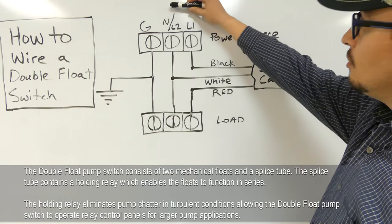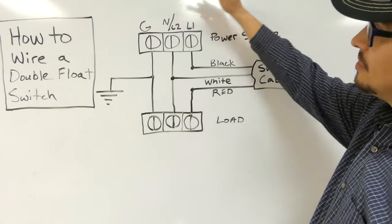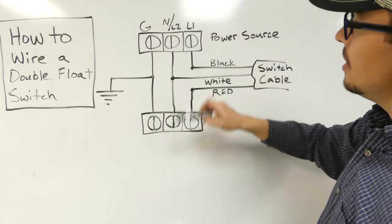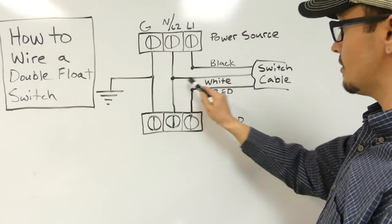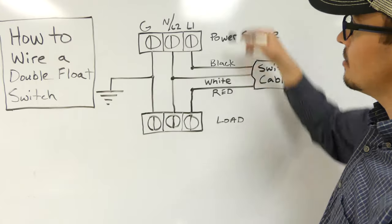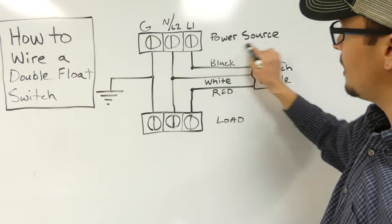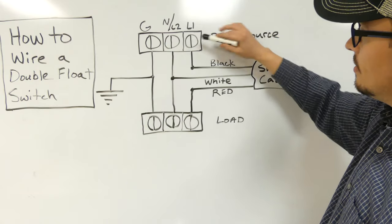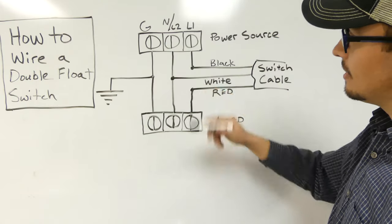So we've got our neutral in 120 volt configurations or our L2 in 240 volt configurations that we're going to hook up to that white wire right there. And then what we're going to do, and of course, this is our incoming power, so our power source. So we're going to have the L1 hooked to our black.